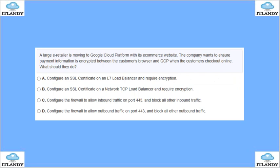A large retailer is moving to GCP for its e-commerce website. The company wants to ensure that payment information is encrypted between the browser and the GCP backend during checkout online. Options include configuring a layer 7 load balancer with a certificate, using a TCP load balancer with a certificate, or configuring firewall inbound port rules. The answer is A — configure layer 7 with an encryption requirement and SSL.